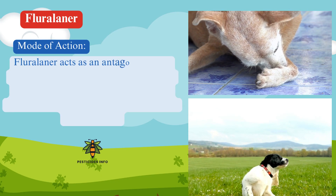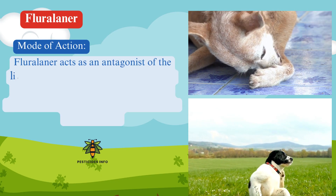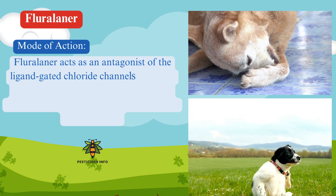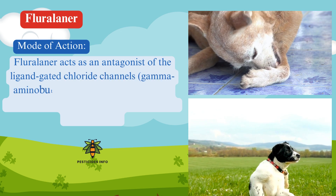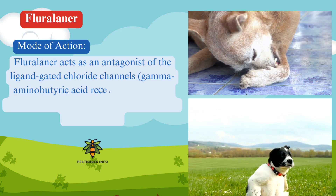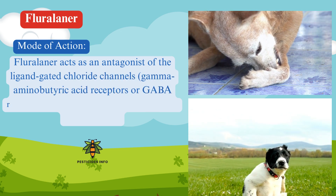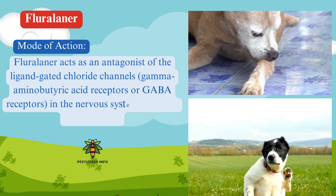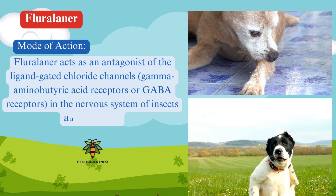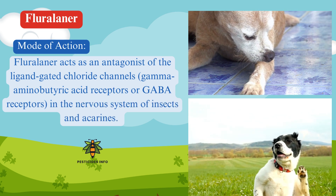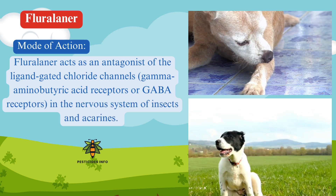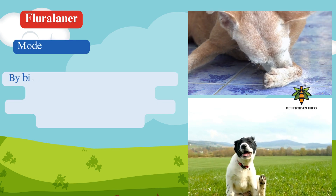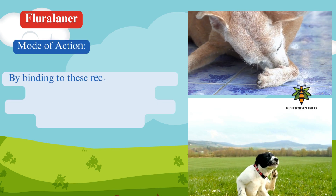Mode of action. Fluralaner acts as an antagonist of the ligand-gated chloride channels, gamma-aminobutyric acid receptors, or GABA receptors, in the nervous system of insects and acarines. By binding to these receptors,